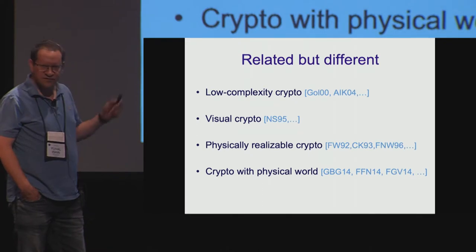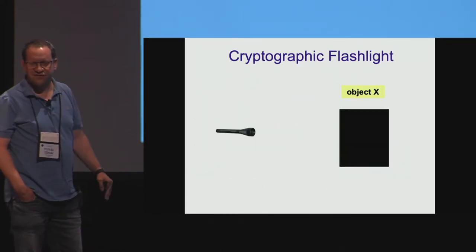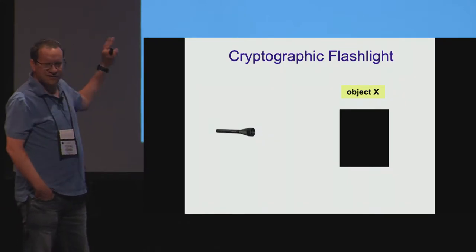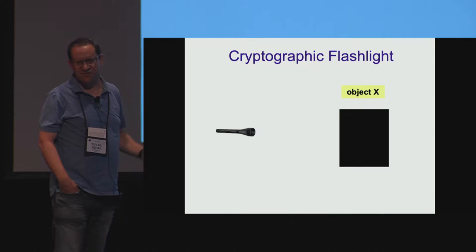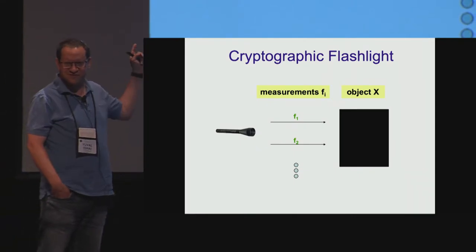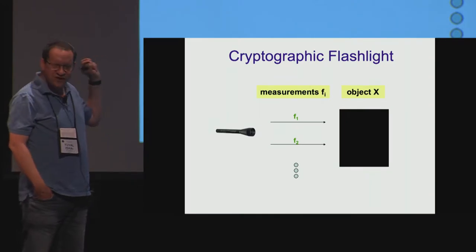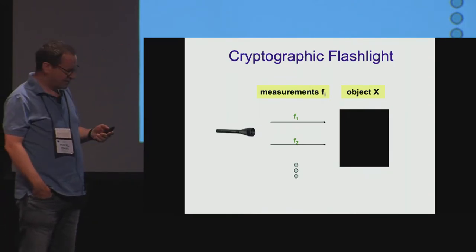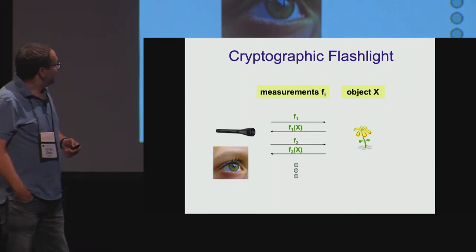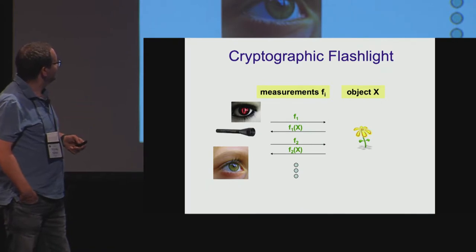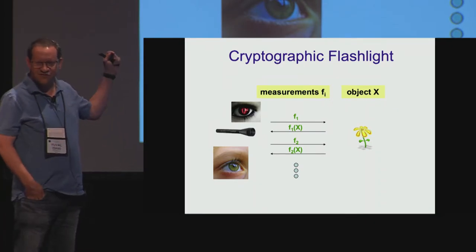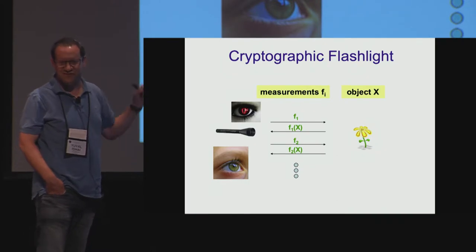Our notion is quite different, and I'll describe it via this cryptographic flashlight metaphor. So, let's first consider a standard flashlight. We are in the dark. There is an object X that we want to sense or observe. To this end, we shoot at the object these photons, Fi. You can think of each Fi as a function that returns a small amount of information about the object. Our eye can combine these returning signals and observe the object. The main issue, from a cryptographic perspective, is that you can have a freeloader standing next to you, and they will enjoy the benefit not only of your flashlight.